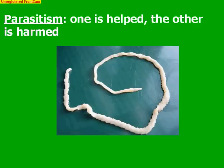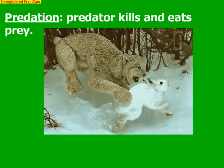Parasitism is when one organism is helped while the other is harmed. For example, a tapeworm inside of you steals your nutrients, so it gets food while you end up malnourished and harmed. Many parasites use their host to lay eggs or reproduce at the expense of the host. We call the harmed organism the host. Predation is when one organism kills and eats the other — a predator and prey relationship, typically seen with carnivores and omnivores. The lynx and the hare are a classically studied example of a predator-prey relationship.